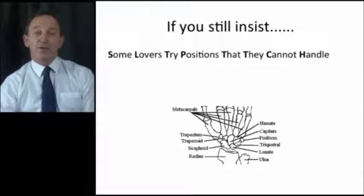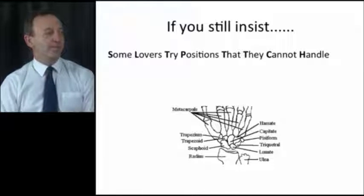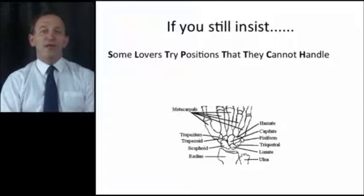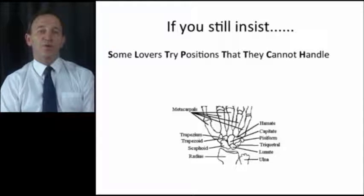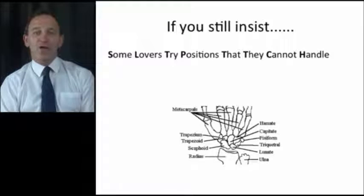If you insist in trying to remember the carpal bones, here they are from left to right with the proximal row first, then the distal row: Some lovers try positions that they cannot handle.